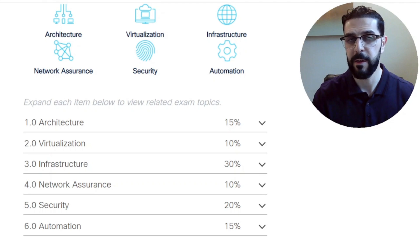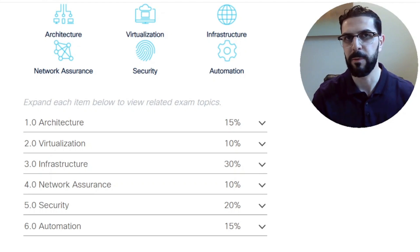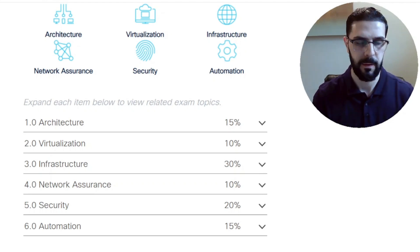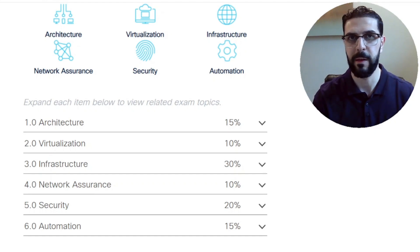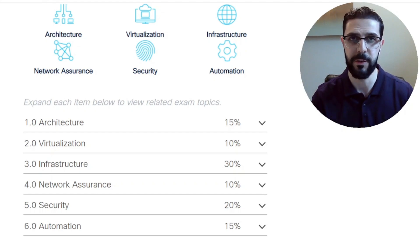The CCMP Enterprise Core is the core exam required, in addition to a concentration exam, to achieve the CCMP Enterprise certification. Achieving this certification could mean a raise, a promotion, or recognition — but most importantly, it is a commitment to level up your skills and achieve a professional-level certification.